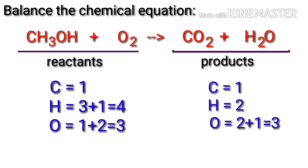The number of atoms is not balanced on both sides. To balance the chemical equation, we need to make use of coefficients. A coefficient is a number that we place in front of a chemical formula.